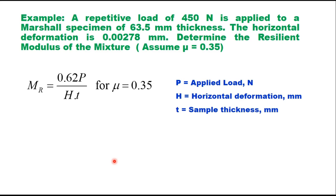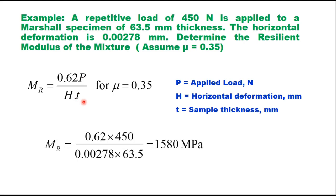To illustrate with an example: a test on a Marshall specimen of 63.5 mm thickness is performed with a repetitive load of 450 Newton and a horizontal deformation of 0.00278 mm. Determine the resilient modulus assuming mu = 0.35. Using MR = 0.62 × P / (H × T), with P = 450 N, H = 0.00278 mm, and T = 63.5 mm, you get an MR value of 1580 MPa.